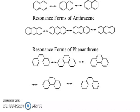Resonance forms of naphthalene: three; anthracene: four; phenanthrene: five. In the case of naphthalene, the first ring is benzene and the second ring is quinoid. In the second structure, both rings are benzene. In the third structure, the first ring is quinoid and the second ring is quinoid.